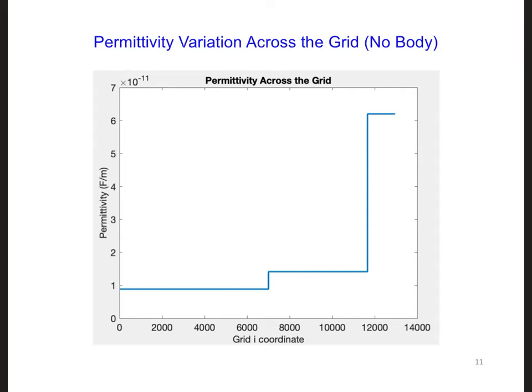This is what I get for the permittivity plot when there is no body. So this is for epsilon. You can see that it's epsilon naught, 8.854 times 10 to the minus 12, until we reach the air-snow boundary. So here's where snow starts.